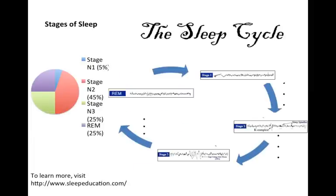The sleep cycle is split into four stages. Stages N1, N2, and N3 where N stands for non-REM. And the final stage is called REM or rapid eye movement sleep. The amount of time that we spend in each stage varies as we age, but here are some approximations.